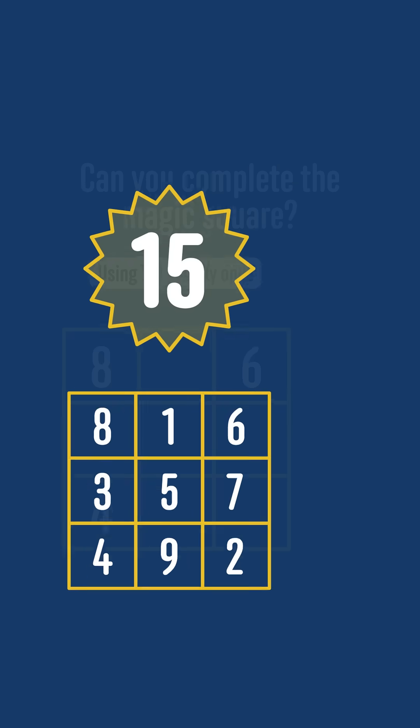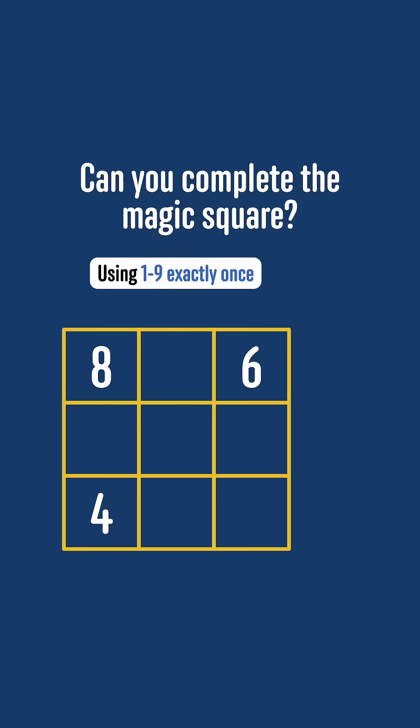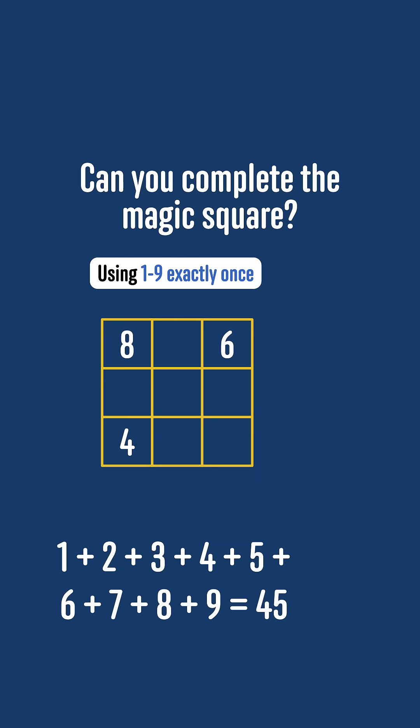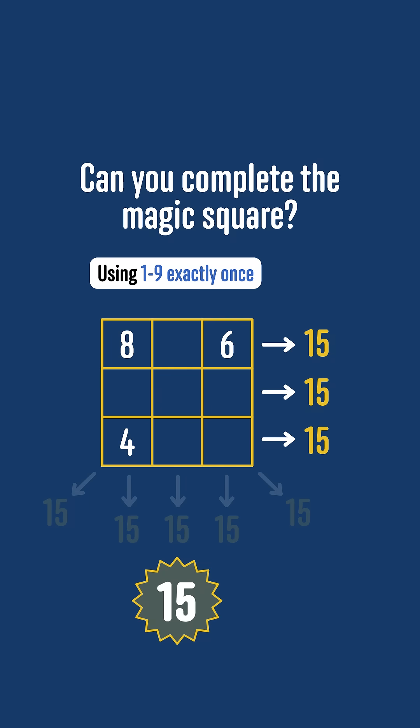The solution to this challenge is that the magic total is 15, and here is the completed square. The key to solving this problem is to realise that we can work out the magic total. That's because we know that the grid is made up of the numbers from 1 to 9, which add up to 45. But each row adds up to the same total, so the magic total must be 45 divided by 3, which is 15.